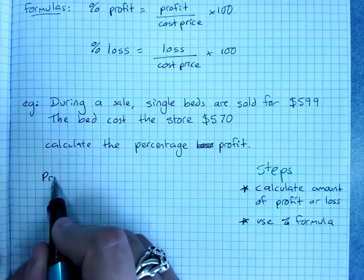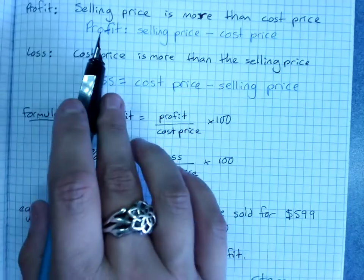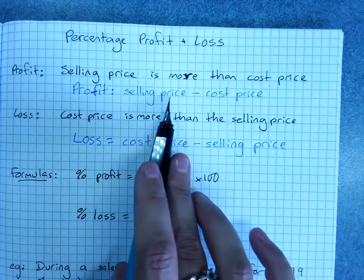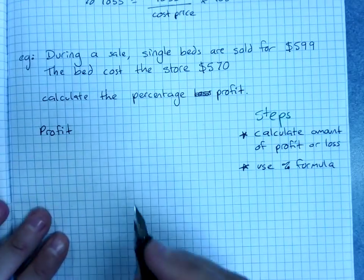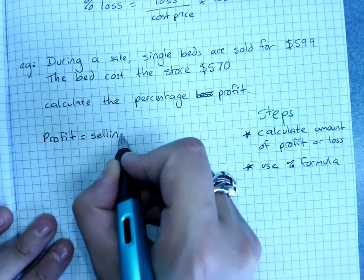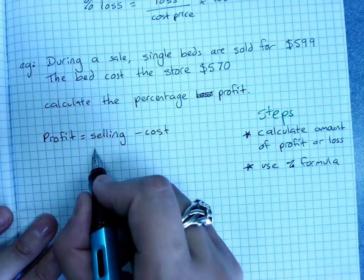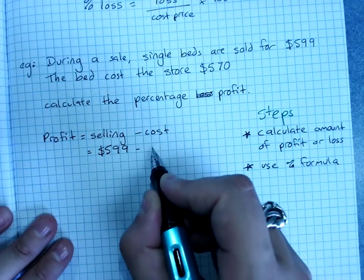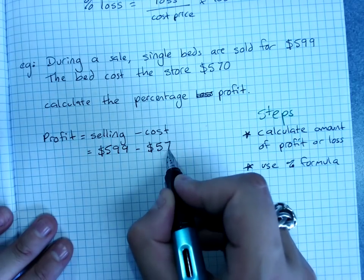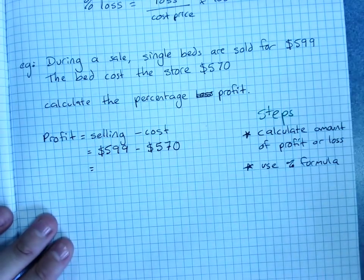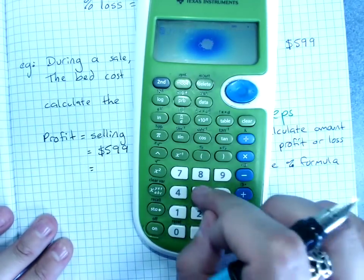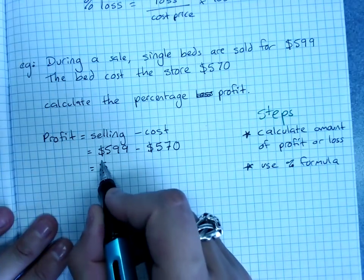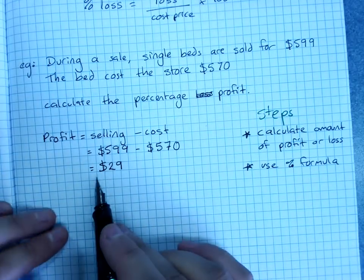So this was profit. Profit is when the selling price is more than the cost price and its selling price take away the cost price. So they're selling it for $599. It cost them $570. So the amount of profit was $599 minus $570 which is $29. Not very much profit. That's the amount of profit.